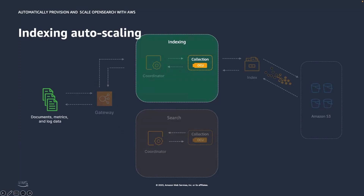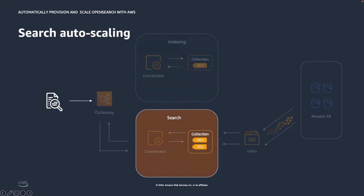Amazon OpenSearch Serverless will automatically scale up and down based on your requirements. When there is a sudden peak on the ingestion side, for example, the service will automatically trigger a scale-up to provide more ingestion compute units as needed. More OCUs are added based on threshold breaches that trigger the autoscaling — no configuration or explicit action is required from the user. The service automatically analyzes utilization metrics at regular intervals. Similarly, autoscaling on the search compute triggers independently from ingestion compute, so search workloads do not interfere with indexing workloads.